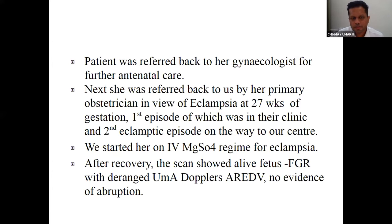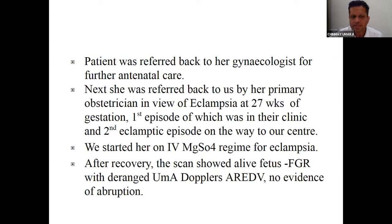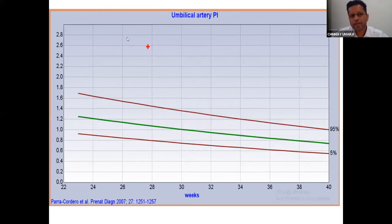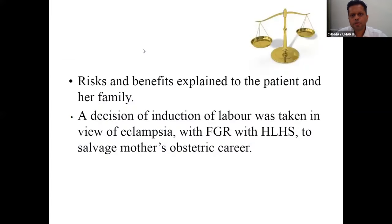She was referred back to us by her primary obstetrician at 27 weeks with eclampsia. The first episode happened at the clinic, and she had another convulsion on her way to us. We started magnesium sulfate and antihypertensives, stabilized her. Scan ruled out fetal demise and abruption, but there was growth restriction — baby below the third centile with deranged umbilical artery Doppler and absent end-diastolic flow. A decision for induction of labor was taken.